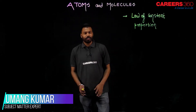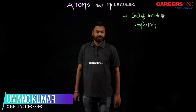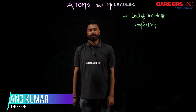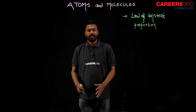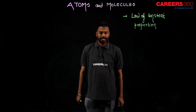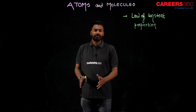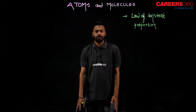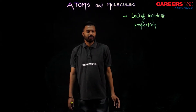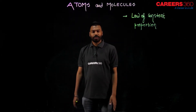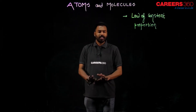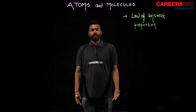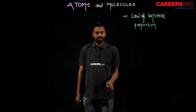Today's topic is the law of constant proportion, also known as the law of definite proportion. It comes under the laws of chemical combination, as discussed in the last video about the five types of laws of chemical combination, like Avogadro's law, law of definite proportion, and law of multiple proportions. The law of constant proportion is one of those five.